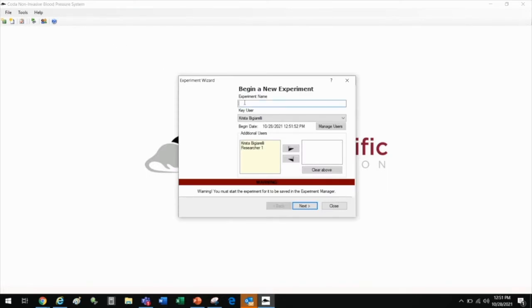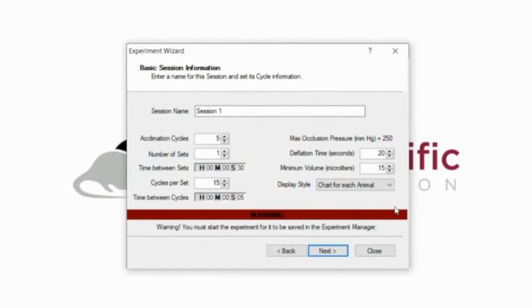For this demonstration, we will create a new experimental protocol. This can be a protocol number or an experiment name. The CODA software will allow you to save your settings across each session of an experiment.